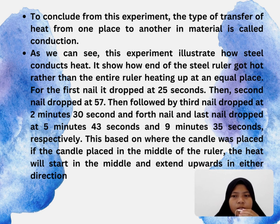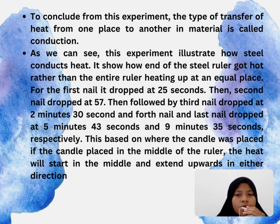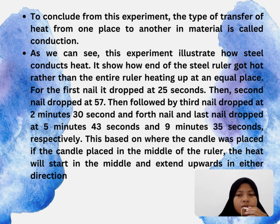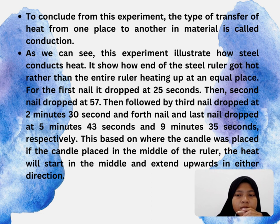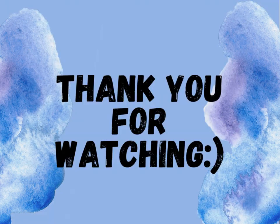To conclude, this experiment illustrates how steel conducts heat. The end of the steel ruler got hot rather than the entire ruler heating up equally. The first nail dropped at 25 seconds, the second at 57 seconds, then the third, fourth, and fifth nails dropped at 2 minutes 30 seconds, 5 minutes 43 seconds, and 9 minutes 35 seconds respectively. This was based on where the candle was placed. If placed in the middle of the ruler, heat would start in the middle and extend outward in either direction. That's all from us — thank you for watching.